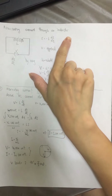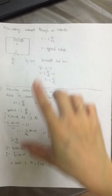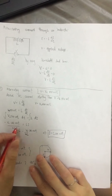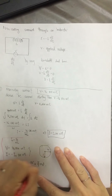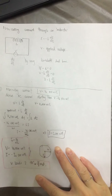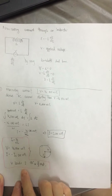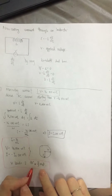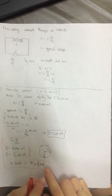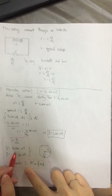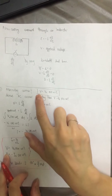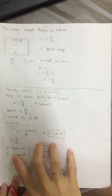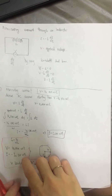From the phasor diagram, V starts at the sine position and I is at negative cosine, which means V leads I by 90 degrees or π/2 radians. The conclusion is that V leads I by 90 degrees. If you start from V equal to V₀ sine ωt, you get I equal to negative I₀ cos ωt.